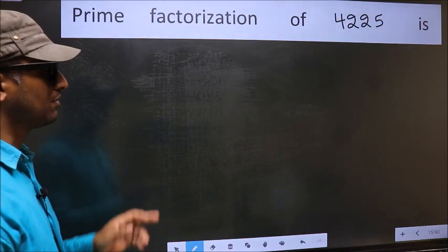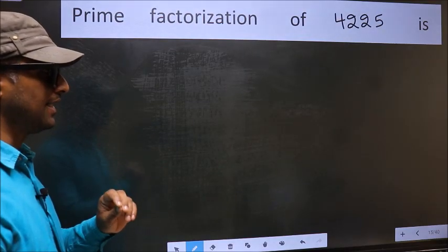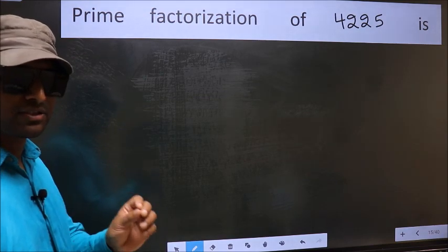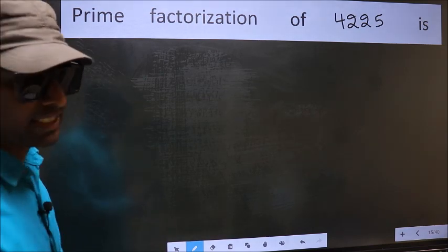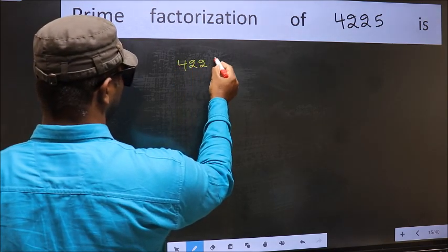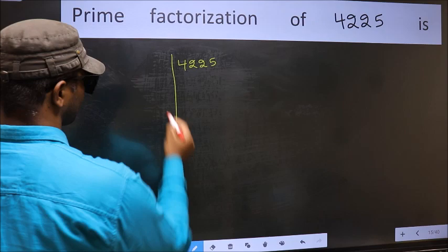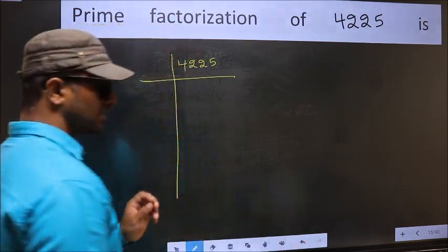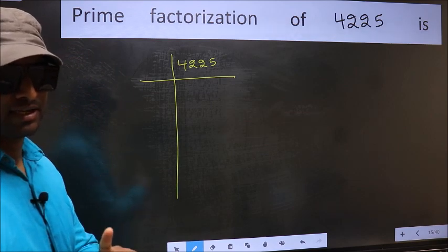Prime factorization of 4225. To do prime factorization, first we should frame it in this way. 4225. This is your step 1. Next.